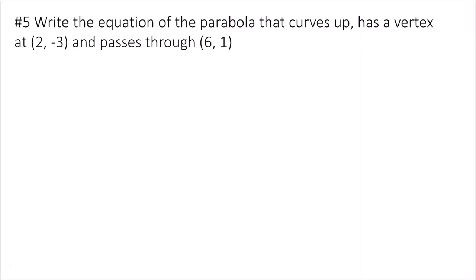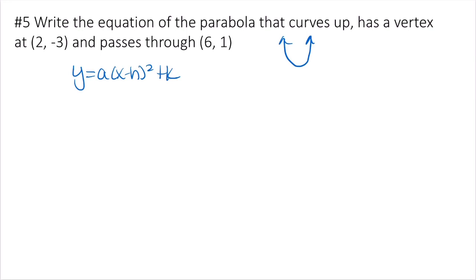This problem asks us to write the equation of a parabola that curves up, has a vertex at (2, negative 3), and passes through (6, 1). Since it curves up, it's a vertical parabola. Because we're given the vertex coordinates, we use vertex form: y equals a times x minus h squared plus k. The vertex gives us h and k, and (6, 1) gives us an x and y value to find a.